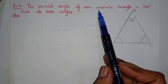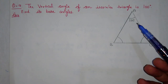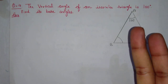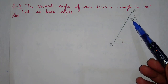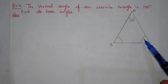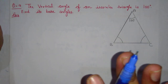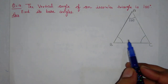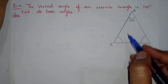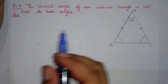We need to find the base angles. The triangle is isosceles, meaning two sides are equal and two angles are equal. Now if one angle is 100 degrees, can another angle also be 100 degrees? No — because if two angles are each 100, their sum alone would be 200, but the sum of all three angles of a triangle must be 180. So the two remaining base angles must be equal to each other, and their opposite sides are also equal.